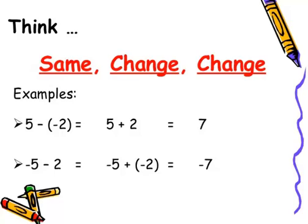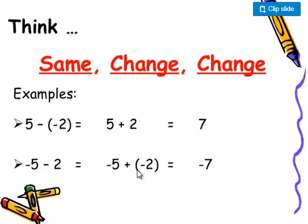Let's look at examples. 5 minus minus 2 equals 5 plus 2, because minus and minus signs multiply to give a plus sign, so 5 plus 2 equals 7. In another example, minus 5 minus 2: when both are negative numbers and we convert with a plus sign in between, we get minus 7.